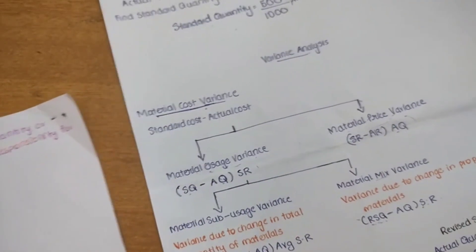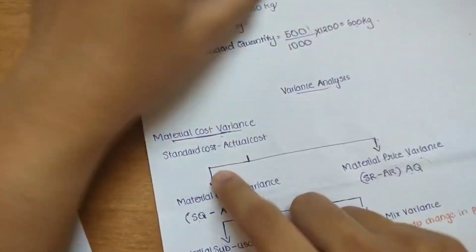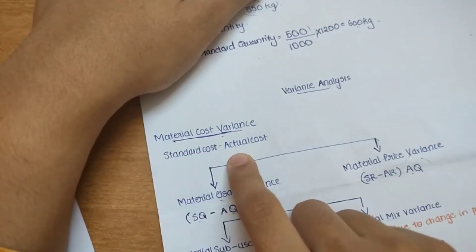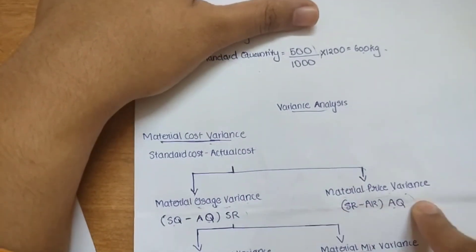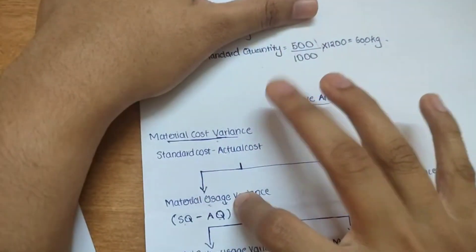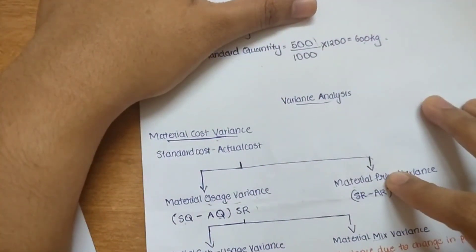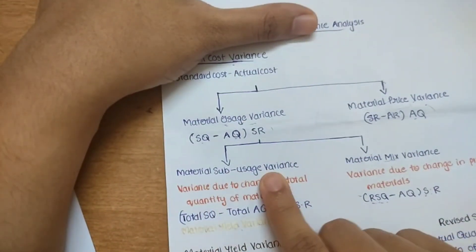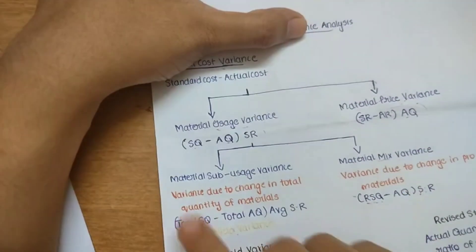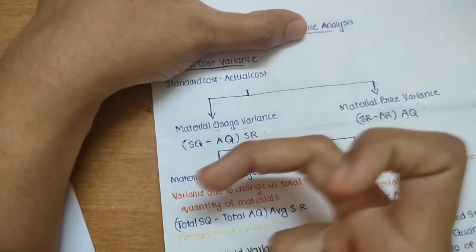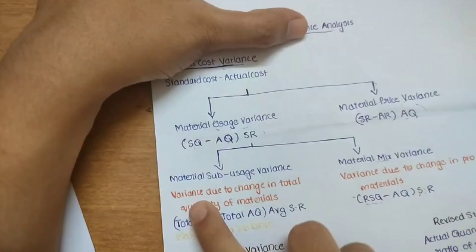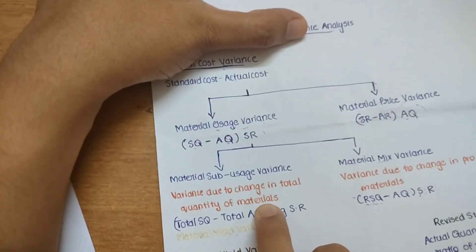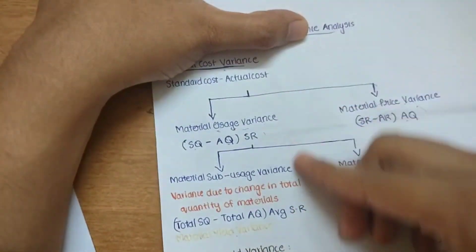Next, we have the material cost variance equals standard cost minus actual cost. Under this we learn material usage variance and material price variance — the production manager handles usage variance, and we also need to learn sub-usage variance and material mix variance.